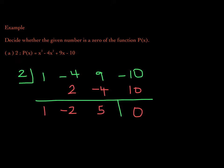That's what the factor theorem says — a polynomial has a factor of (x − 2) if and only if the remainder is 0. So, let's write our conclusion: 2 is a zero of p. Since 2 is a real number, graphically speaking, if you were to analyze the graph of this cubic function, you would find that 2 is an x-intercept of the graph.